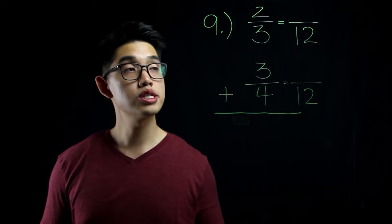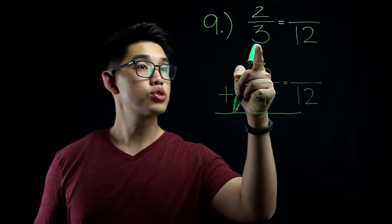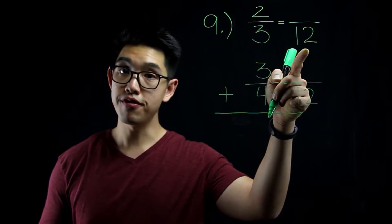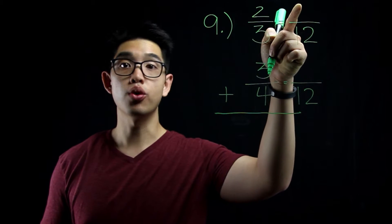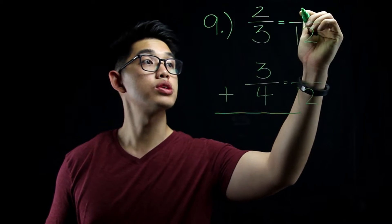Now I'm going to find the corresponding numerators. Since 3 became 12 because I multiplied by 4 for the denominator, I'm also going to multiply 4 on top. 4 times 2 equals to 8.